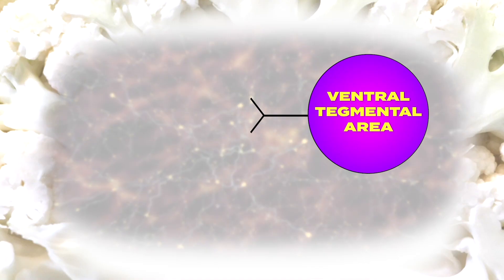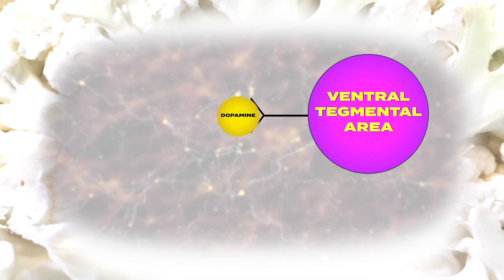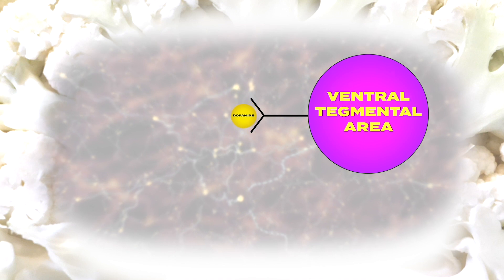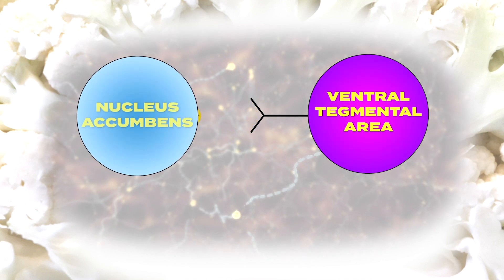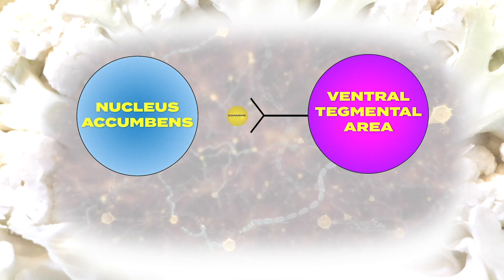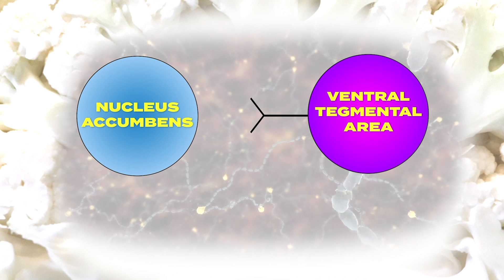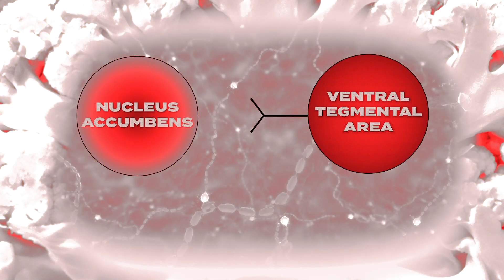Welcome back. Last time we were deep within the mammalian midbrain looking at an idea called dopamine tone. We said that dopamine tone at the nucleus accumbens mapped to Dr. Silkworth's restless, irritable, and discontented base state — one of the core phenomena he found in his addicted patients in the 1930s.